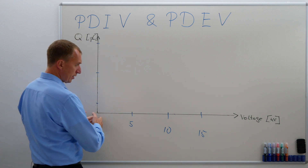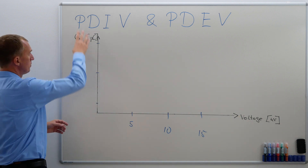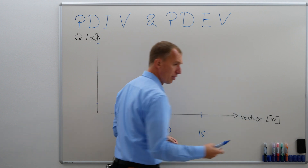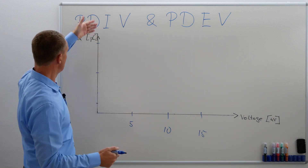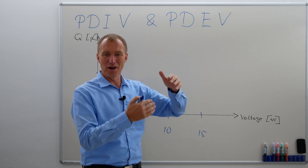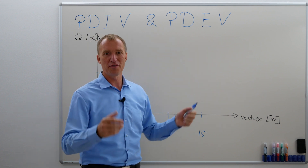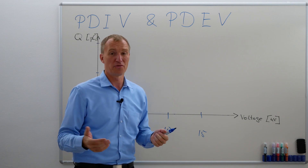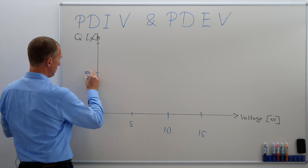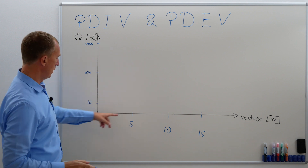On this axis we have the voltage in kV — 5, 10, 15, maybe 20 kV. On the other axis we have the charge magnitude of the partial discharges, Q, measured in picocoulombs. I'm going to use a logarithmic view — this way I can cover everything from 0 pC to nanocoulombs at once without missing anything. So in logarithmic: 10 pC, 100 pC, 1000 pC — everything covered.